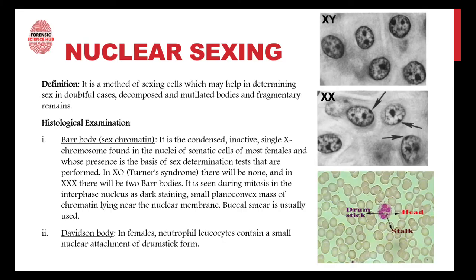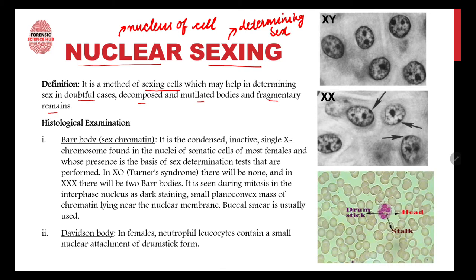First, let's discuss the definition of nuclear sexing. It is a method of sexing cells which may help in determining sex in doubtful cases, decomposed or mutilated bodies, and fragmentary remains. As the term suggests, 'nuclear' refers to the nucleus of the cell, and 'sexing' means determining whether the body is male or female.